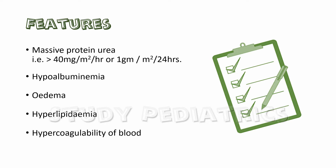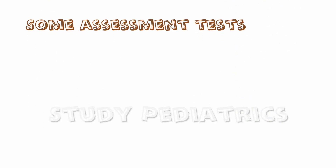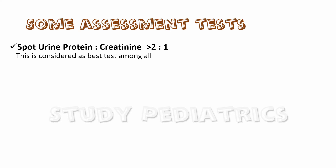Now let's come to some assessment tests. The spot urine test measures the protein-to-creatinine ratio; if more than 2, it indicates nephrotic range. This test is considered the best as it accounts for both protein and creatinine. A similar picture of increased protein excretion can be seen in rhabdomyolysis, but creatinine secretion there will be increased too, so the ratio will be less than 2 in rhabdomyolysis.